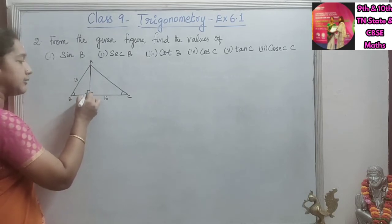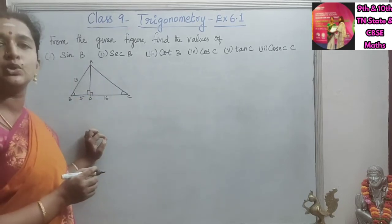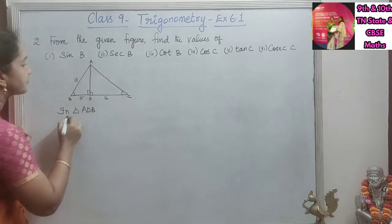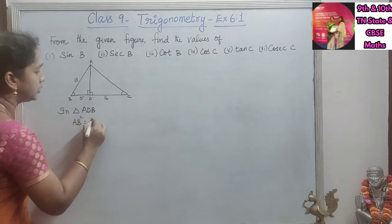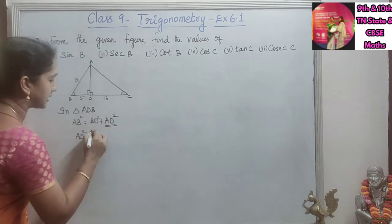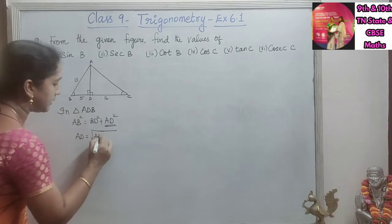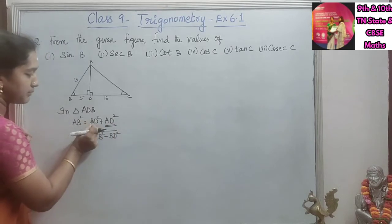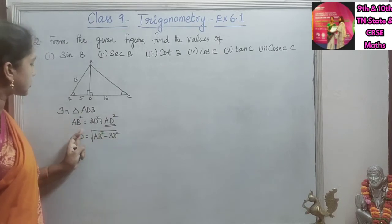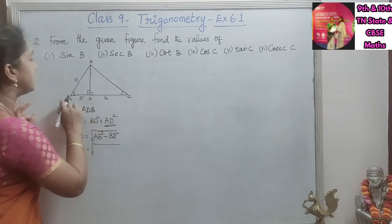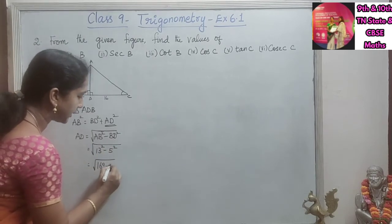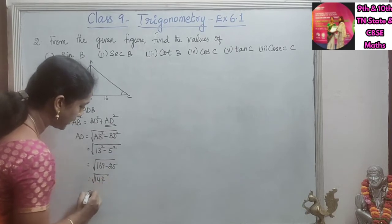In triangle ADB, this is a right angle triangle, so we use the Pythagoras theorem. AB squared equals BD squared plus AD squared. We need to find AD, so AD equals root of AB squared minus BD squared. That is root of 13 squared minus 5 squared, which is root of 169 minus 25, equals root of 144, which equals 12 units.